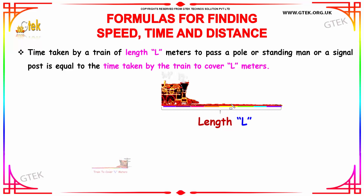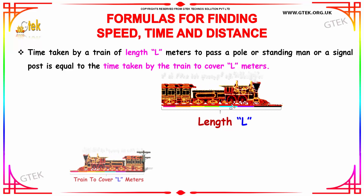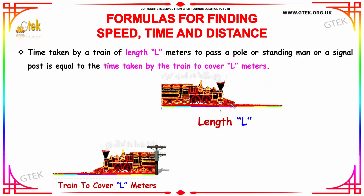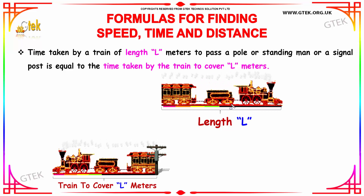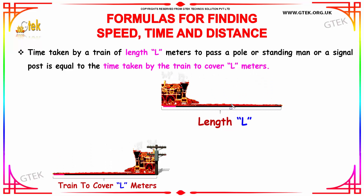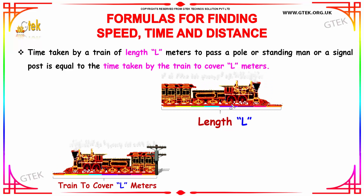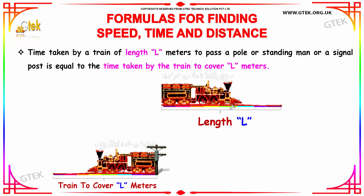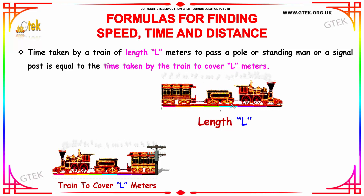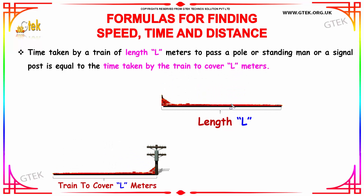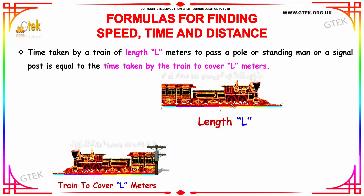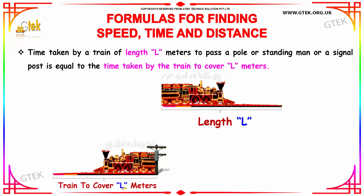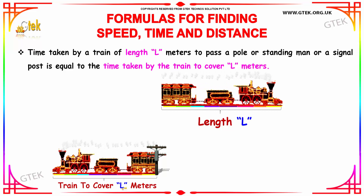The time taken by a train of length l meters to pass a pole, or standing man, or a signal post is equal to the time taken by the train to cover l meters. So the time taken corresponds to the length of the train l, and the train covering l meters is calculated as the time.